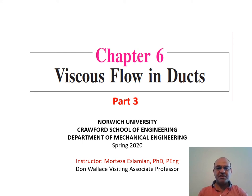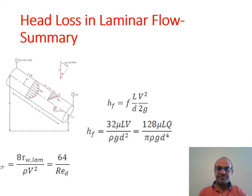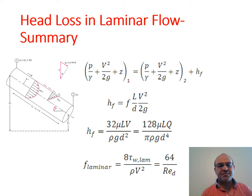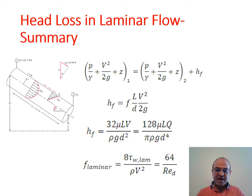This is Part 3 of Chapter 6, Viscous Flow in Ducts and Pipes. In the previous slides, we developed equations for head loss in laminar flow. Because of the simplicity of laminar flow, we can derive equations to find the friction loss and head loss in the pipe.